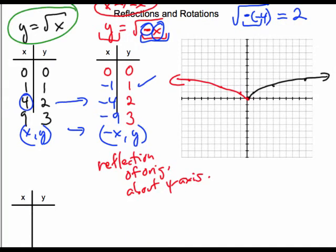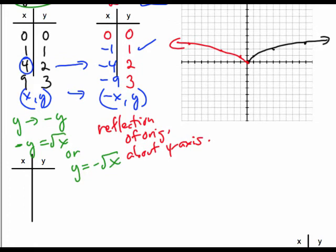Alright, the change I'm going to make next for my original is that I'm going to replace y with negative y. And so my equation would be negative y equals the root of x. Or if you prefer, y equals negative root x. And so I'm making my change to y. And so I'm going to keep my x coordinates the same as they were originally.